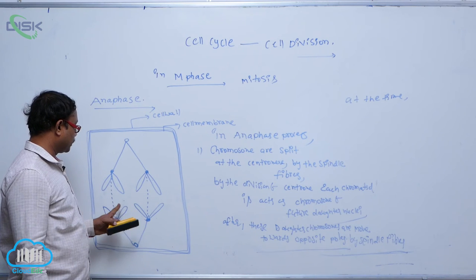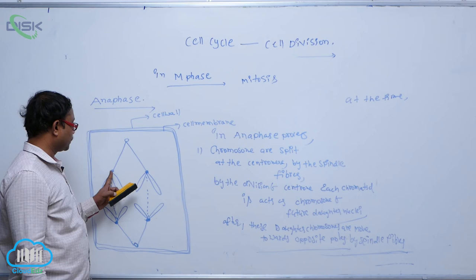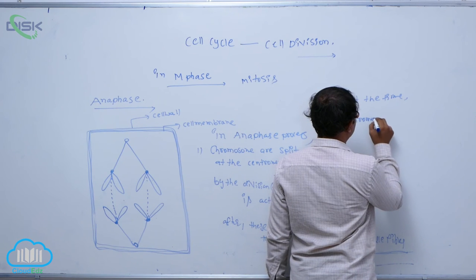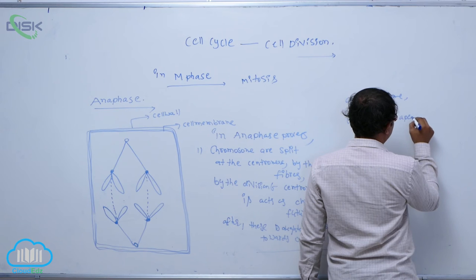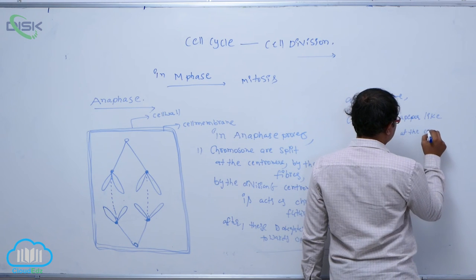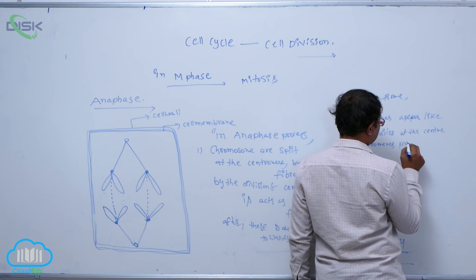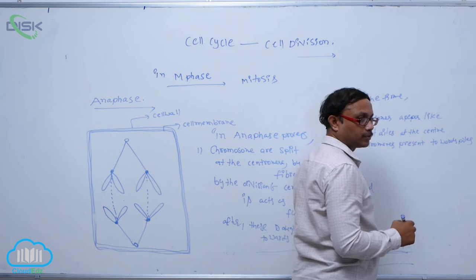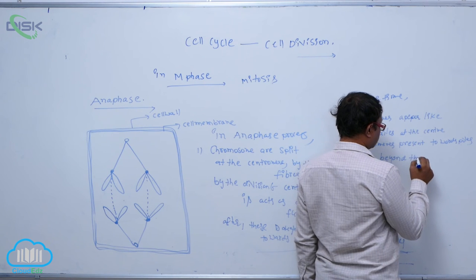At that time, chromatids are present at the center, just like tails, while centromeres are present towards the poles. This appearance is known as 'beyond the trailing.'